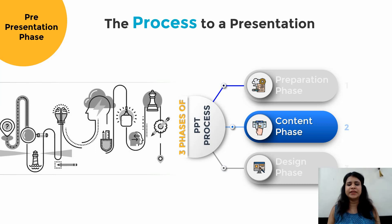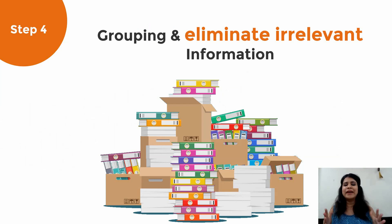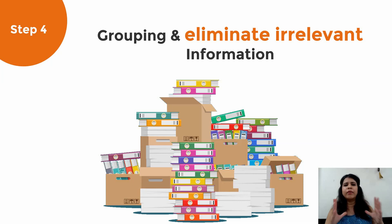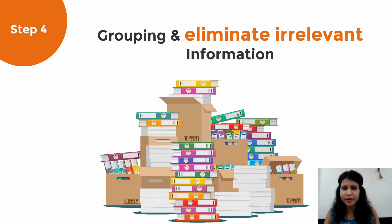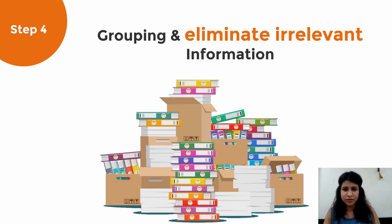Now moving on to the second phase, which is content phase. Once you have all the data with you, this next step is super important: start grouping and eliminating irrelevant information. Because when we have a lot of data, we end up putting most of it on the slides, which we definitely do not want. So keep only the relevant data — if you need numbers, highlights, headlines, keep those and delete anything you do not need, because the more data you have, the more cluttered your mind and presentation will be. Group your information in different folders or buckets and eliminate anything you don't need. That's your step four.